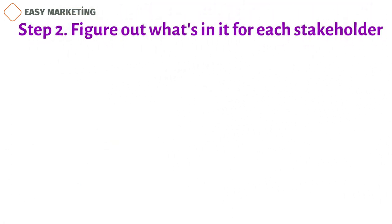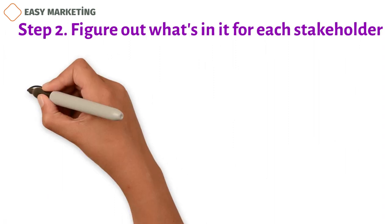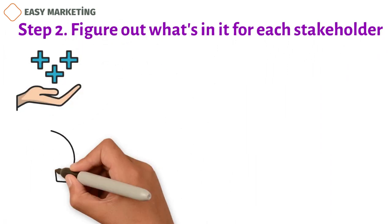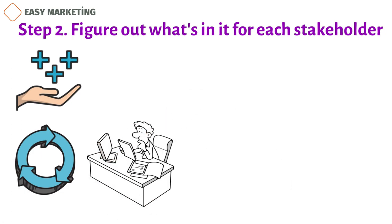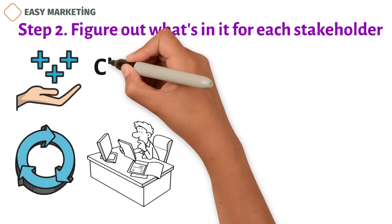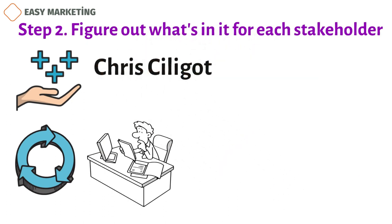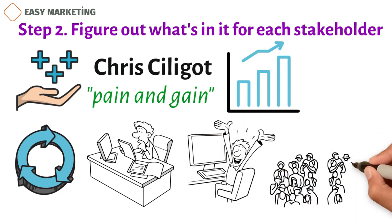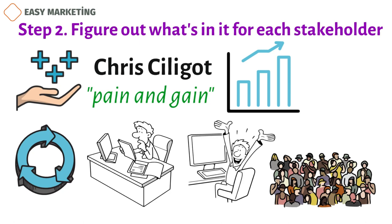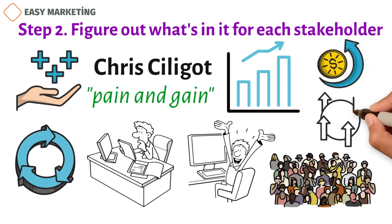Step 2. Figure out what's in it for each stakeholder. What are the most important benefits for each player in an ecosystem and what are they willing to give up in exchange? What are the biggest problems your users have and where can you help them the most? Chris Siligat from ClearBridge says that this map is a pain and gain one. Examples: sales go up, which makes people happy. Advertisers can reach a large number of people who are interested in their products. The partners in the channel will save money and spend less on getting new customers. The end user has more time to spend with his or her family.